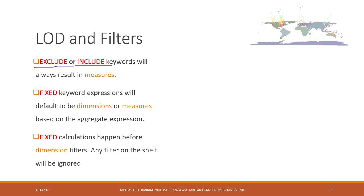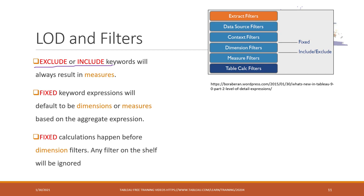Any filter on the shelf will be ignored by FIXED. There are different types of filters. The first level is extract filters — when you extract data you can select what data will be extracted. When you bring data into Tableau you can also define the source filter, which is applied to the secondary level. That is the top level and also the lowest level.